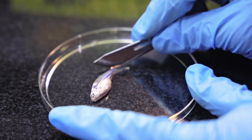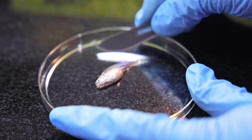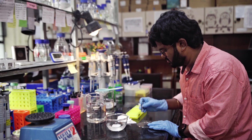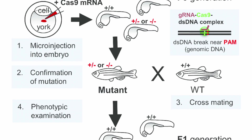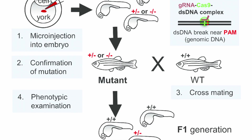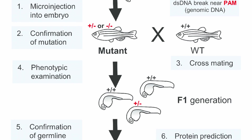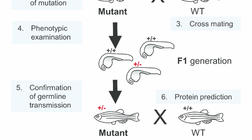In our lab we are trying to develop a human ciliopathy disease model using zebrafish and to understand the cellular basis of such complex diseases. We use CRISPR gene editing techniques to generate knockout zebrafish and identify them by genotyping PCR, and further they are characterized for disease-associated phenotypes.